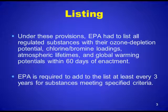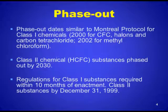Under these provisions, EPA had to list all regulated substances with their ozone depletion potential, chlorine bromide loadings, atmospheric lifetimes, and global warming potentials within 60 days of enactment of the 1990 Amendments. EPA was required to add to the list at least every three years for substances meeting specified criteria. Phase-out dates similar to the Montreal Protocol for Class I chemicals: 2000 for CFCs and halons, and 2002 for methyl chloroform, with carbon tetrachloride also included.